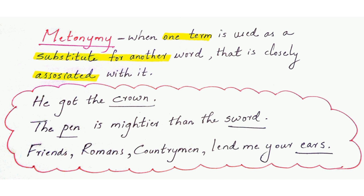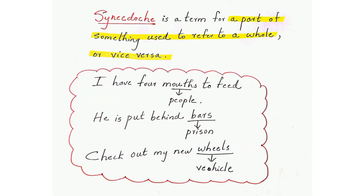For metonymy: 'He got the crown' — instead of saying he became king, we say he got the crown, so 'crown' substitutes for 'king.' 'The pen is mightier than the sword' — here 'pen' represents words or writing, and 'sword' stands for physical aggression or force. 'Friends, Romans, countrymen, lend me your ears' — 'ears' here refers to your attention. So in metonymy, a closely associated word is used as a substitute.